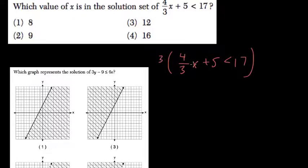3 times 4 divided by 3 is just 4. 3 divided by 3 is 1. So it's 4x plus 5 times 3, which is 15.